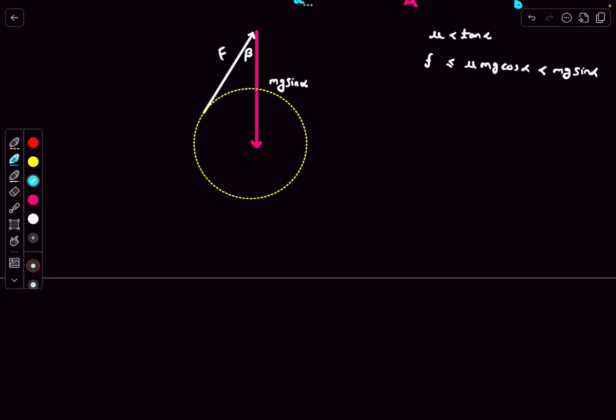This represents a condition where beta is maximum. If I complete the triangle, this is what f vector is going to be. Using the properties of circles, this angle is going to be 90 degrees. If from this triangle we write down the value of sine beta, it would be small f over mg sine alpha.